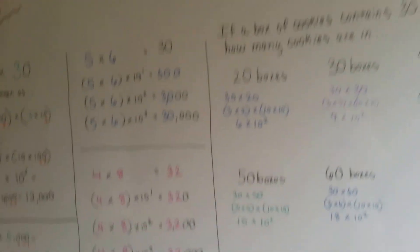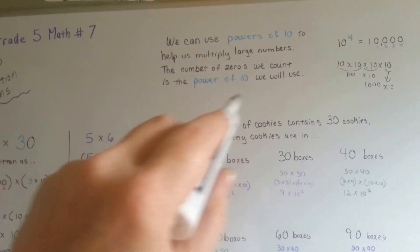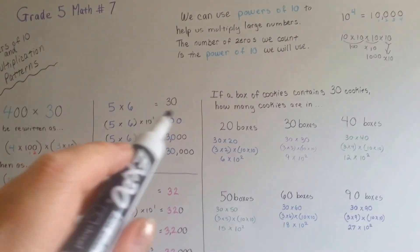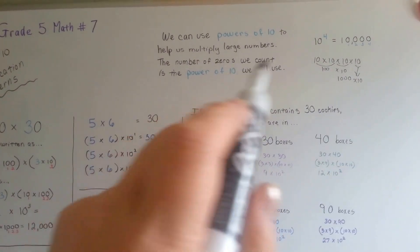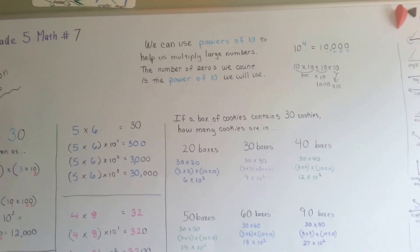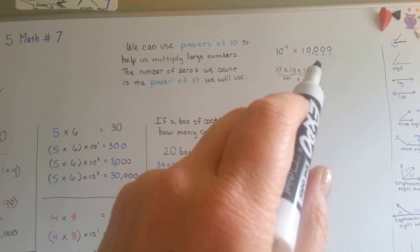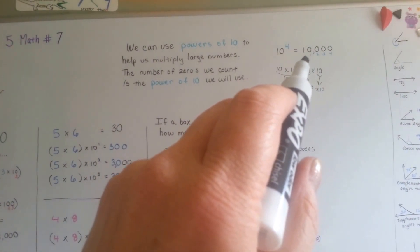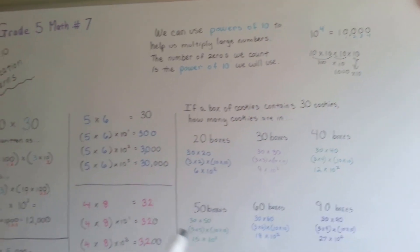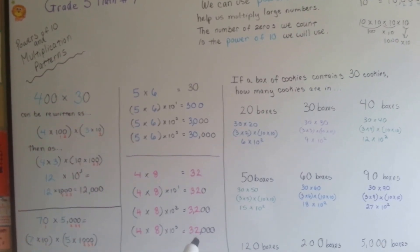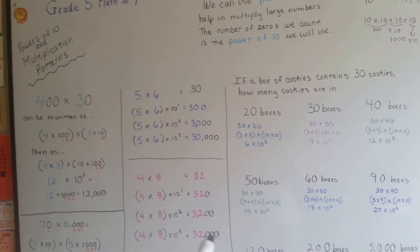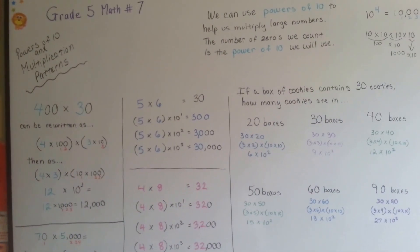Just remember that when you're working with powers of 10 — just tens, not any other numbers, just tens — you can use counting the zeros as telling you how many zeros are in the power, or vice versa. If you wanted to turn 10,000 into a power of 10, you'd do 10 to the fourth power because it's got 4 zeros. If you wanted to write 32,000 as a power of 10, you could do 32 times 10 to the third power because there are 3 zeros. Isn't that easy?